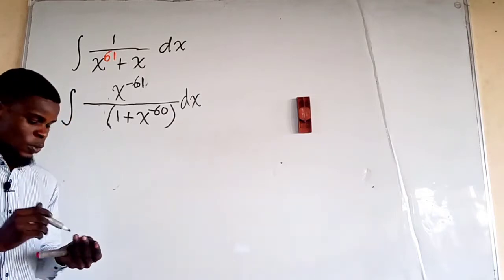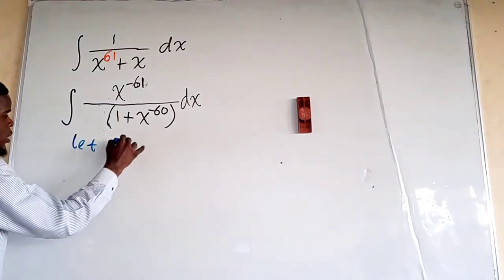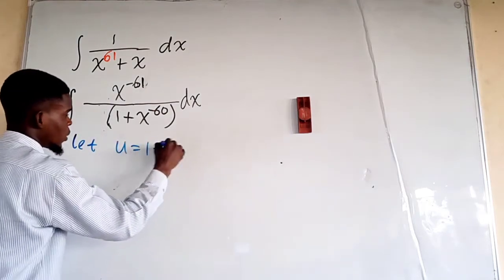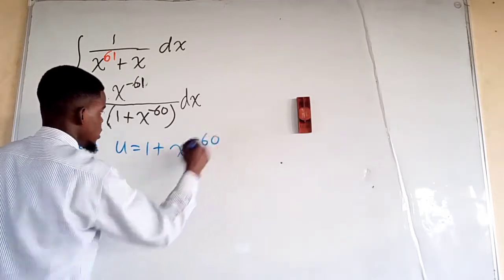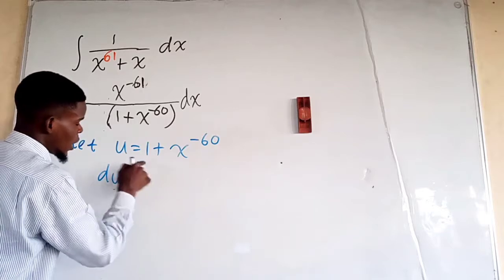I'm going to use u as a variable—that is a u-substitution. So I would say let u take the denominator: 1 plus x to the power negative 60.